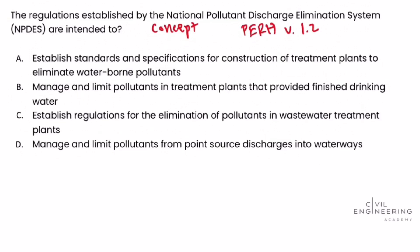The National Pollutant Discharge Elimination System — the point of it is to manage pollutants from point source discharges into waters of the US. That would be something like a specific effluent pipe leaving a wastewater treatment plant discharging treated clean effluent, or a stormwater pipe discharge at the end of the stormwater network at the outfall. Those are point source discharges.